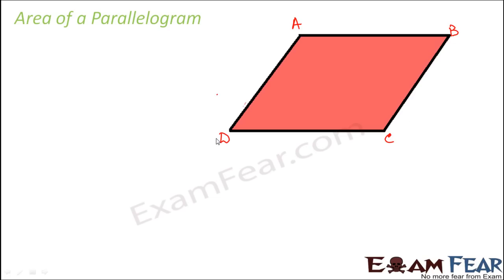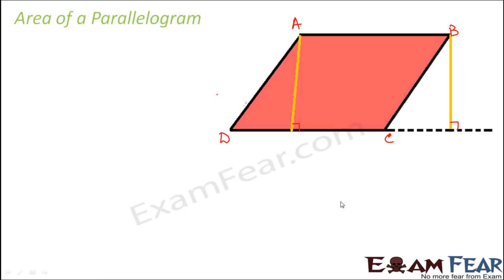So what we do is, let us draw perpendiculars from point A and point B. From A we have drawn a perpendicular on CD. Similarly from B we have drawn a perpendicular on the extended line of CD. Now let us name these points as E and F. Do you see a rectangle anywhere? Yes, of course — A, B, F, E is a rectangle.